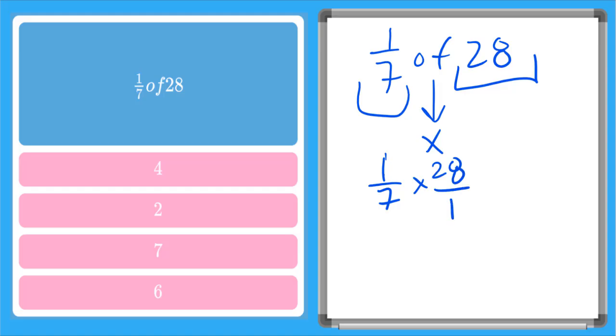I'm going to add a one down here in my denominator because I'm working with fractions. And then I can just multiply across my numerator. One times twenty-eight is twenty-eight. And across my denominator, seven times one is seven.